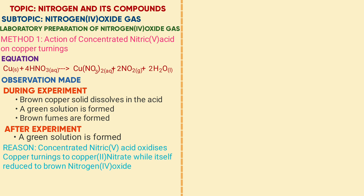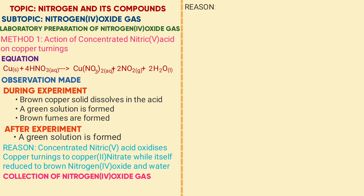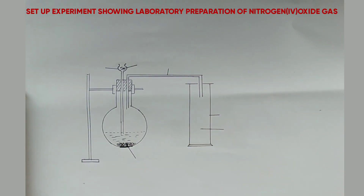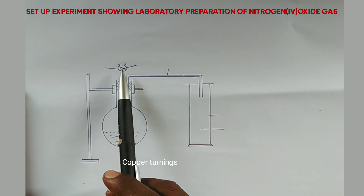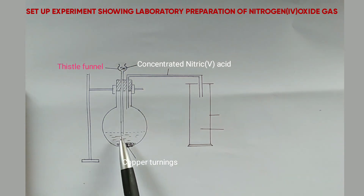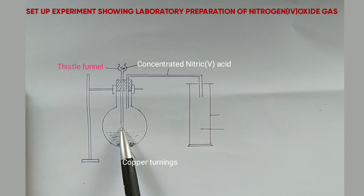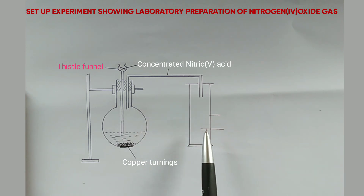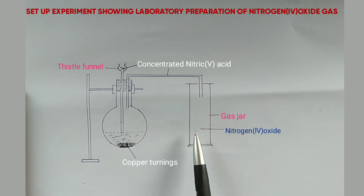Collection of nitrogen dioxide is by downward delivery, because nitrogen dioxide gas is denser than air. The diagram shows laboratory preparation: copper is placed in a flask, concentrated nitric acid is added via a dropping funnel, which should be dipped in solution. The gas produced is collected by downward delivery. Initially, the first amount of gas should not be collected because it is impure — mixed with air originally in the flask.